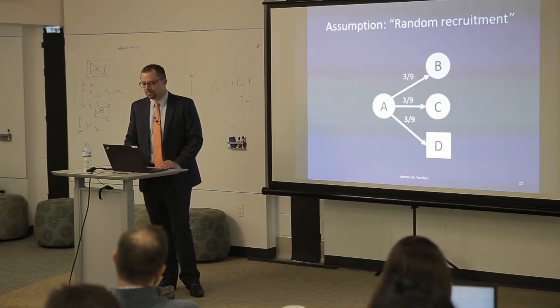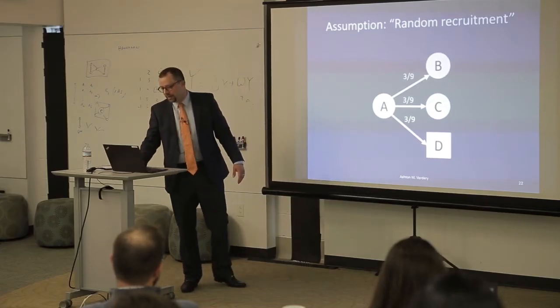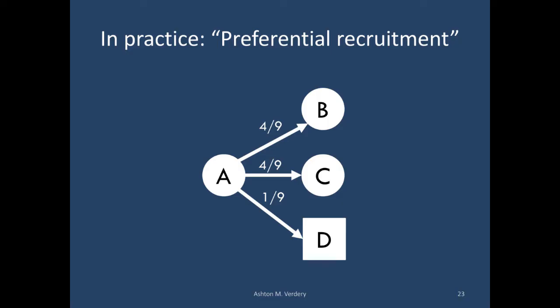Within RDS, the original proposed methods assume that individuals have equal likelihood of recruiting all of their friends. So if you're person A with two circle friends and one square friend, it doesn't matter which person you're likely to recruit — you're just as likely to recruit B, C, or D. The problem in RDS is that we often see preferential recruitment: if you're a circle, you're much more likely to recruit circles than a square. There's often within-network homophily — it could be because certain ties are weaker, or because they think certain people need the money more. There's a deviation from equal recruitment probabilities to this preferential recruitment.